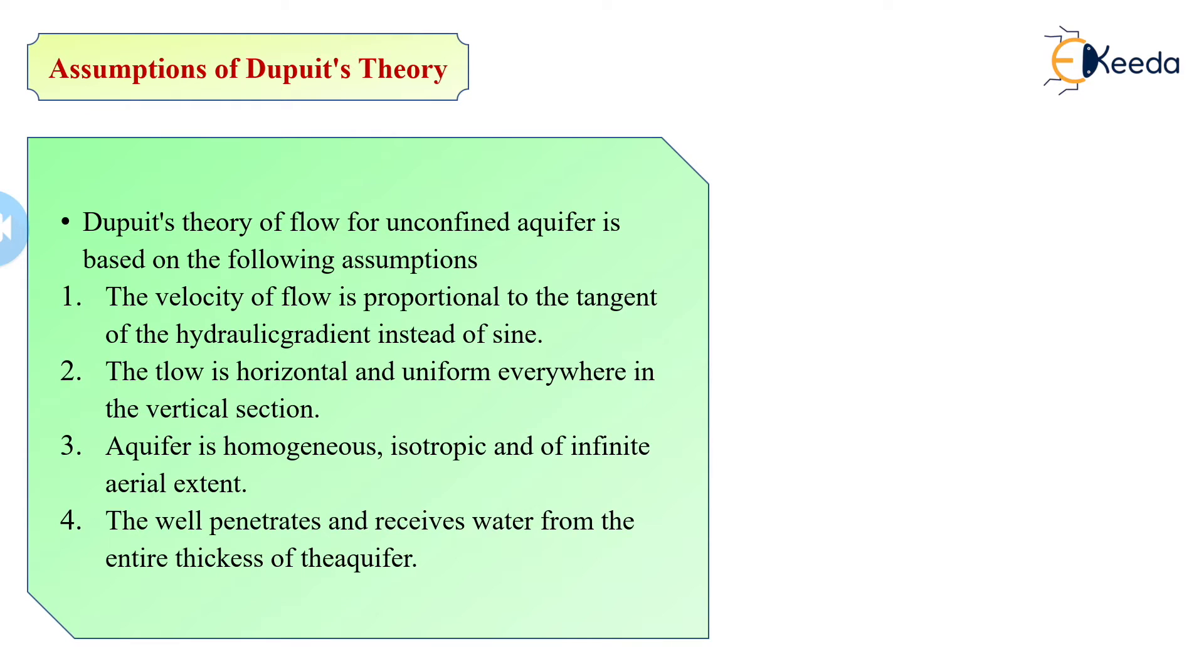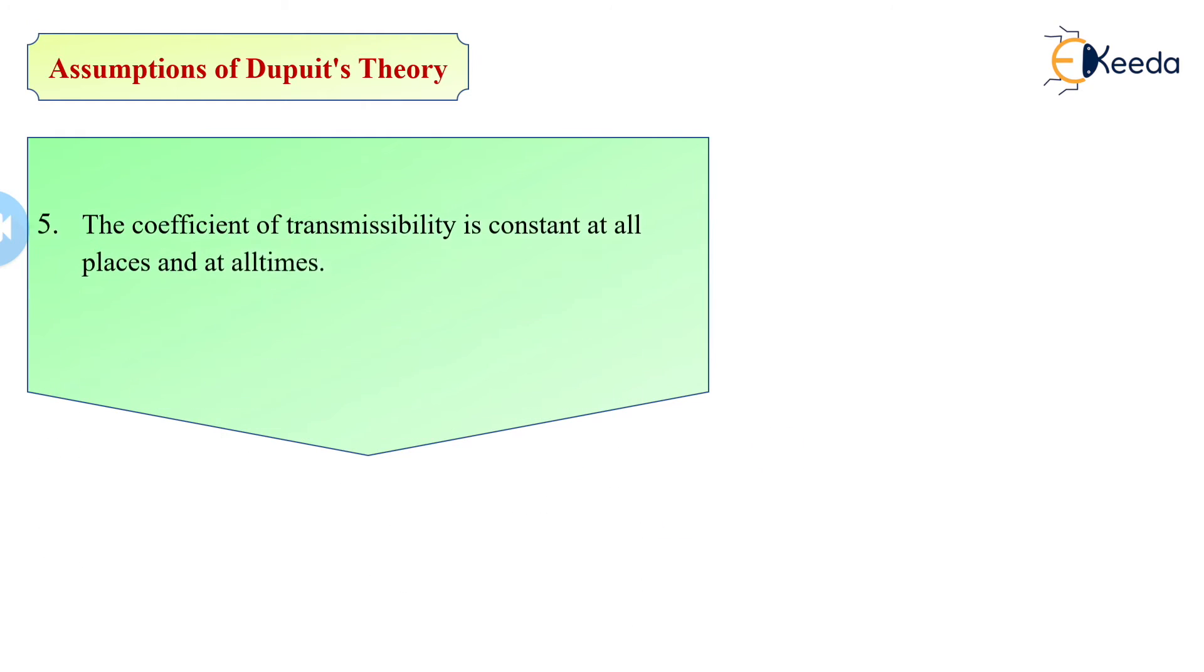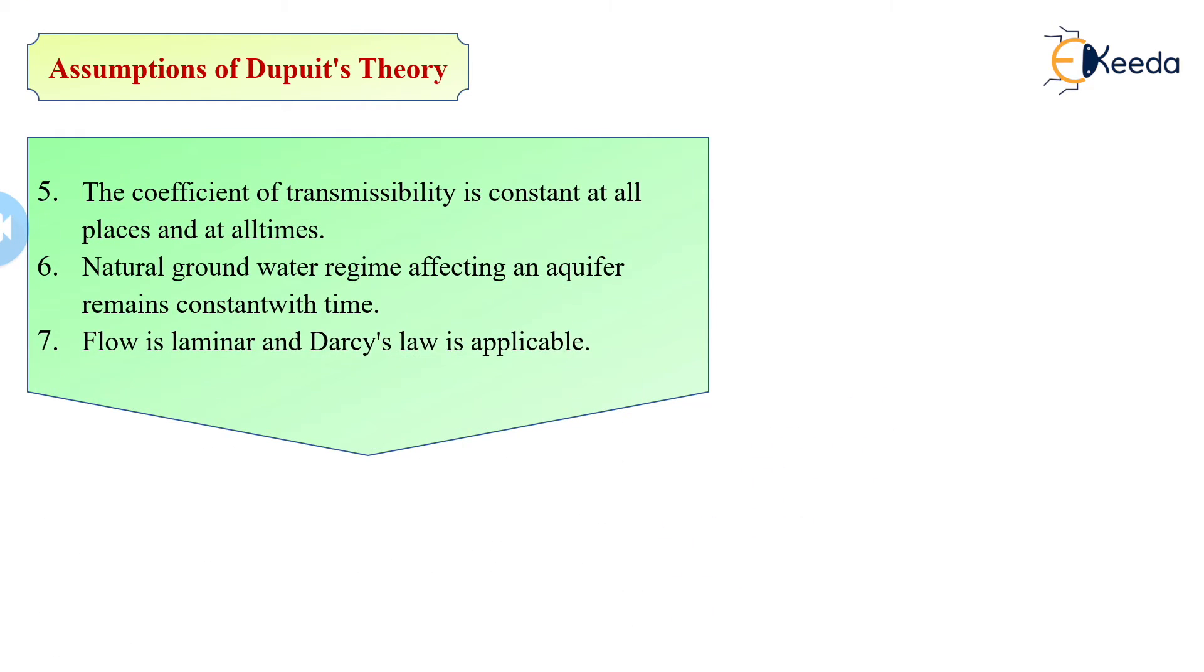See, all these assumptions they had made are certainly related to certain parameters or certain conditions. So these are the assumptions that we have to follow by deriving this Dupuit's theory or by examining or by studying this Dupuit's theory.